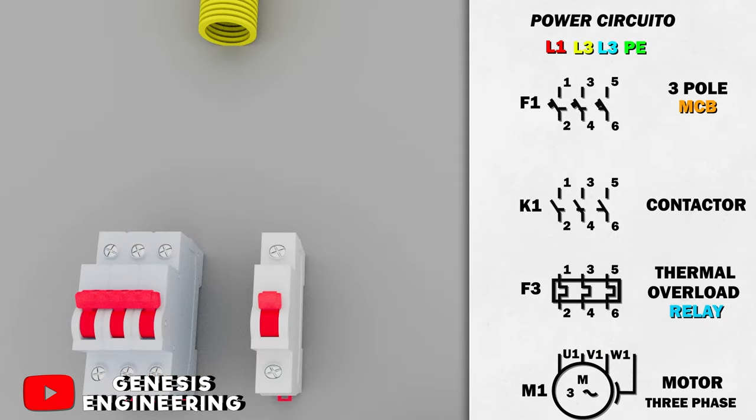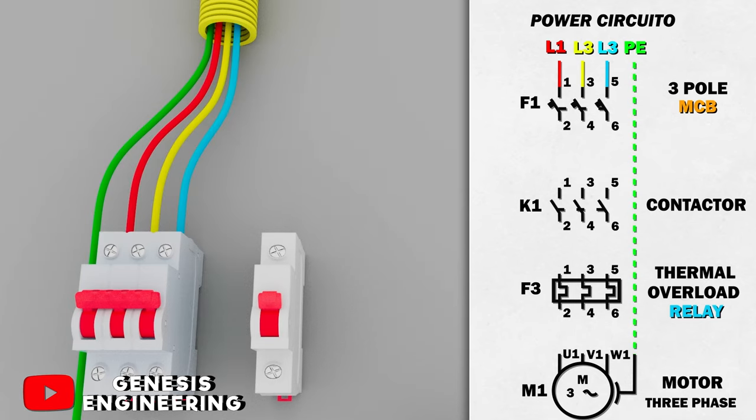Starting by connecting the power circuit, connecting the three phases to the three-pole MCB miniature circuit breaker and the grounding conductor, we connect directly to the motor.